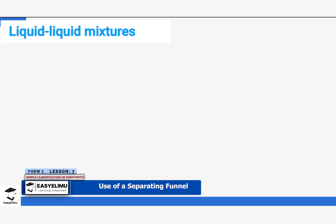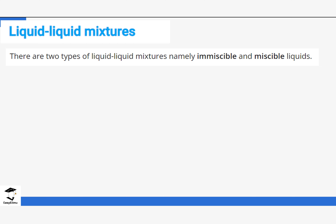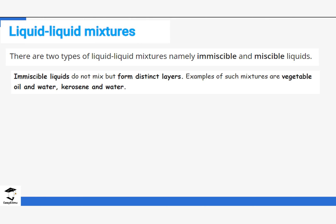There are two types of liquid-liquid mixtures: immiscible liquids and miscible liquids. For immiscible liquids, they do not actually mix — they form layers. An example is oil and water, which is a very common example, and also kerosene and water. If you add oil and water, you'll notice it forms layers, so we call that mixture immiscible — it's not mixing.